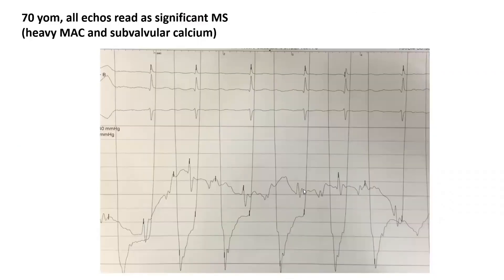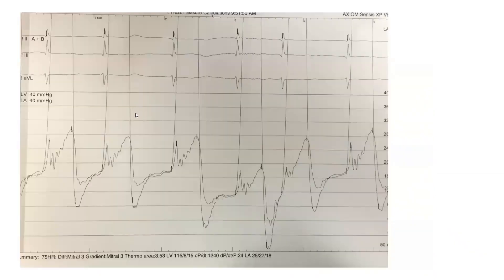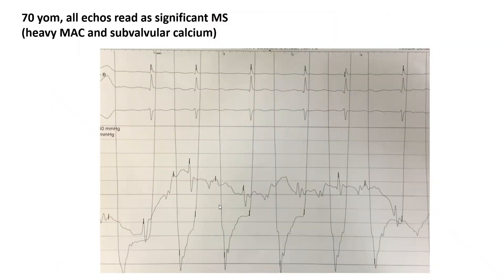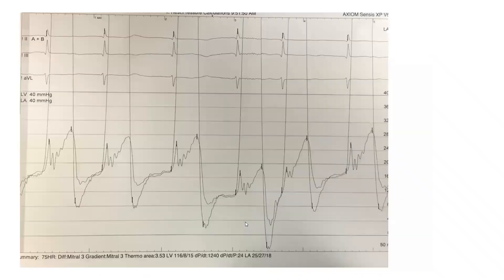Don't use wedge pressure if your echo is inconclusive for MS. You need to do transseptal puncture and measure direct LA pressure simultaneously with LV. If echo is inconclusive, wedge pressure-LV will be even more inconclusive. That is not the way to study mitral stenosis in questionable cases.